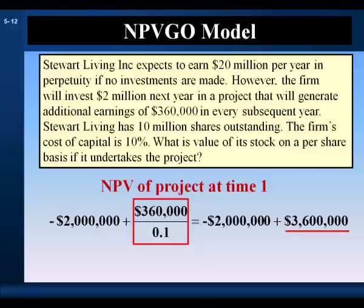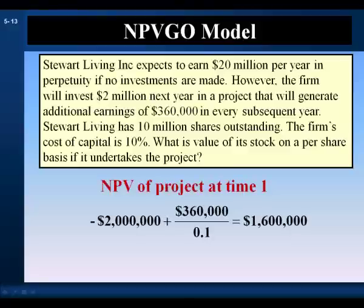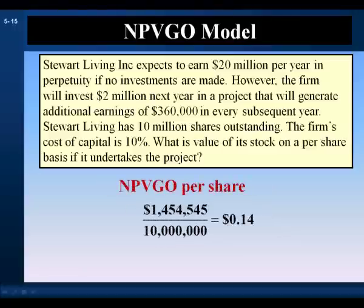The year one value of the project is $3.6 million. We subtract the $2 million cost from the $3.6 million present value and get a net present value at time one of $1.6 million. We discount the net present value back one year at 10% to get its time zero value. And this is the net present value of the growth opportunity, which equals $1,454,545. We divide it by 10 million shares to get its per share value: $0.14 per share.